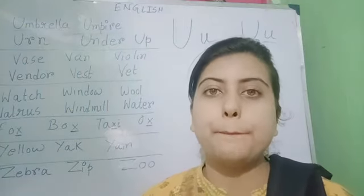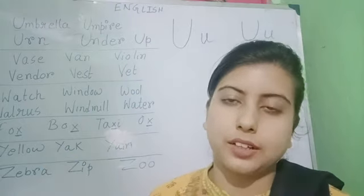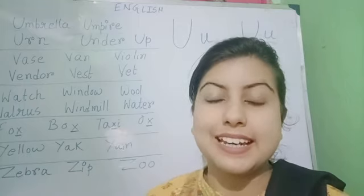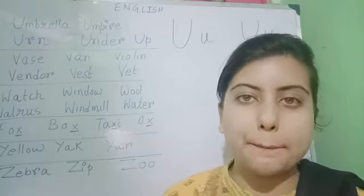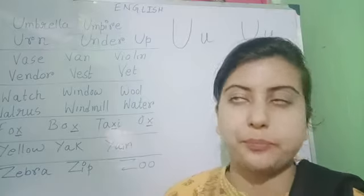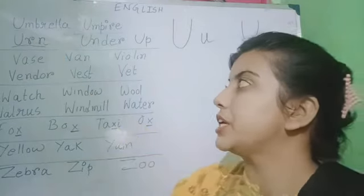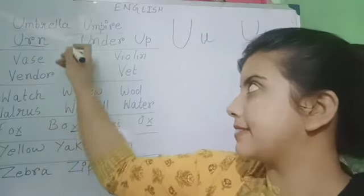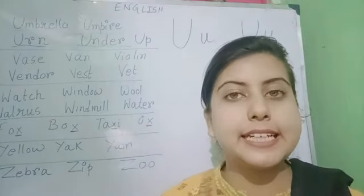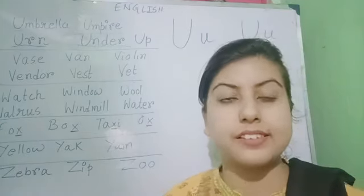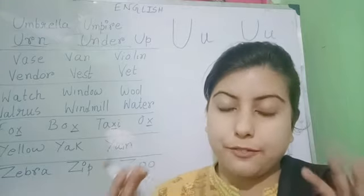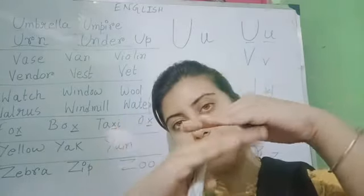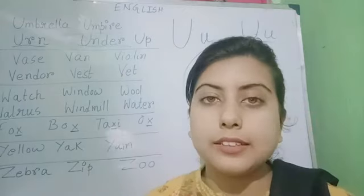U-M-P-I-R-E. Umpire. Next, earn — urn. Urn is a pot. Next, under. U-N-D-E-R. Under is a position. If a cat sits under the chair, that means it is below the chair. Under the chair. Under is a position.